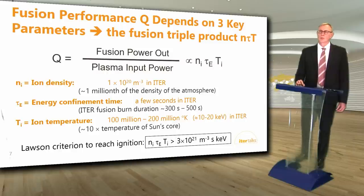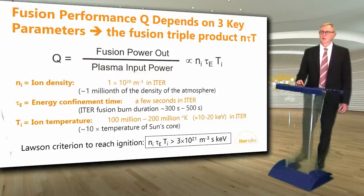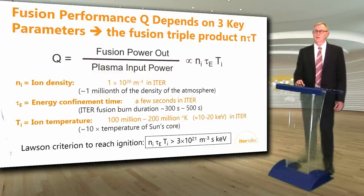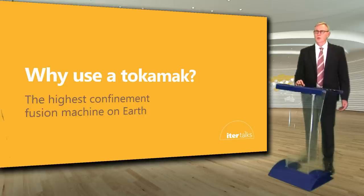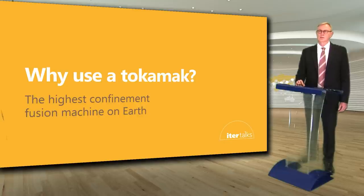There are many ways to try to exceed this number, and various approaches to fusion try different combinations. The sun has an extremely large tau. ITER's approach is to achieve moderate values in all three of these quantities so that the product of them will approach the Lawson criterion. Why do we use a tokamak? Because it's the highest confinement fusion machine on Earth.